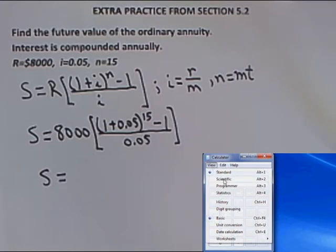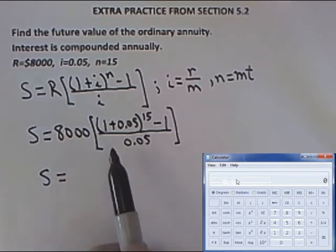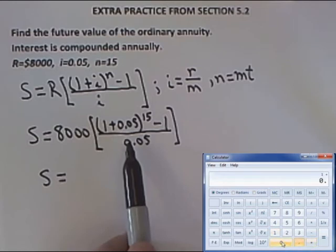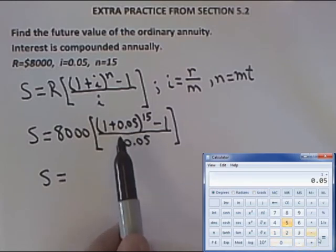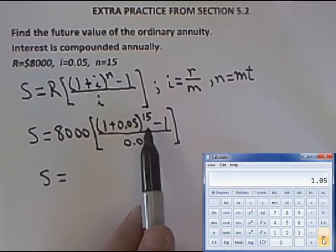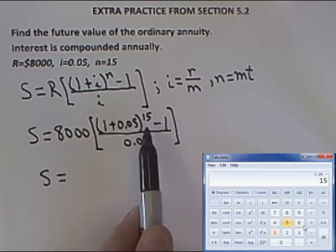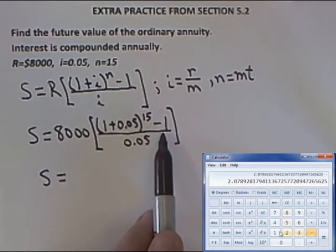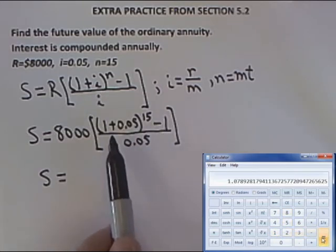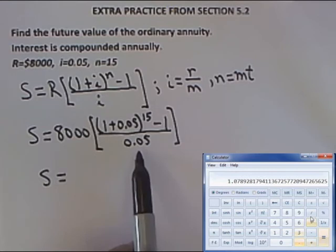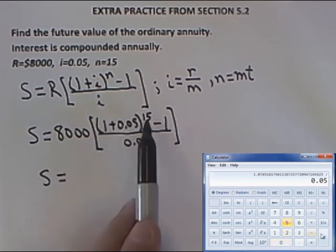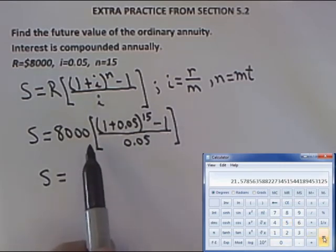You have 1 plus 0.05 equals. That quantity gets raised to the 15th power, so you get x to the y, enter 15, click equal. Then that quantity has 1 subtracted from it, so minus 1 equals. That's the entire numerator. Now simply divide by 0.05, click equal. That gives me the entire quantity in brackets.